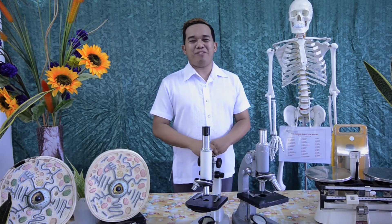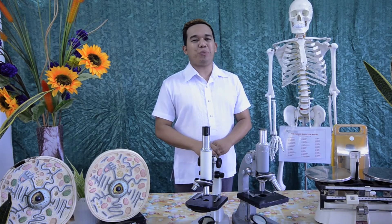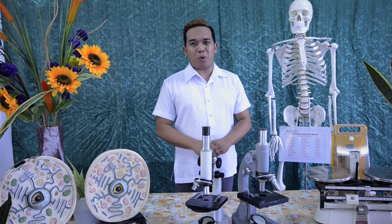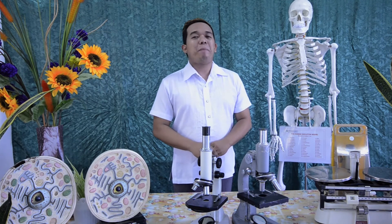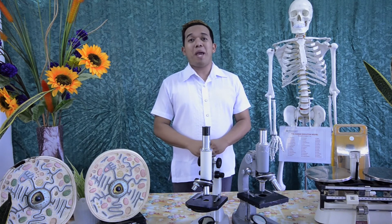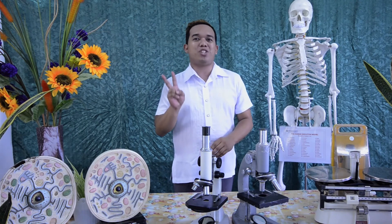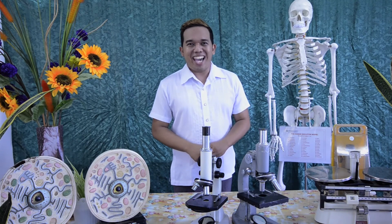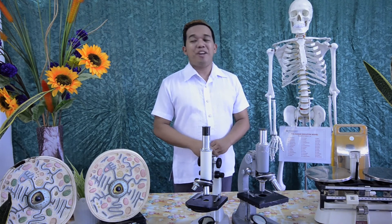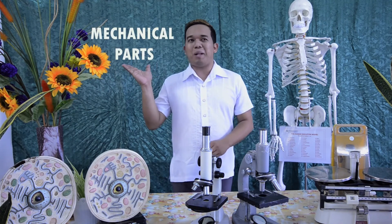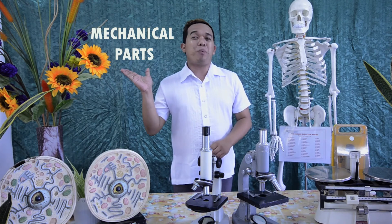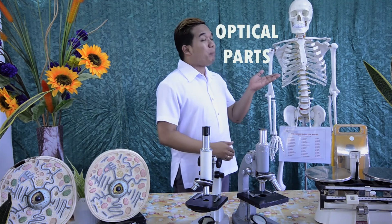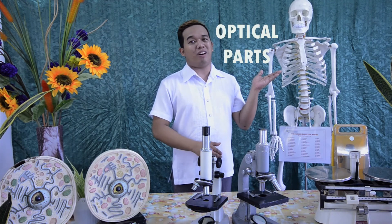And there you have it. Now just a short recap. We have learned about the parts of a compound microscope and its functions. Parts of the compound microscope may be grouped into two major categories: the mechanical parts, used to support and adjust the parts of the microscope, and the optical parts, used to enlarge the specimen.